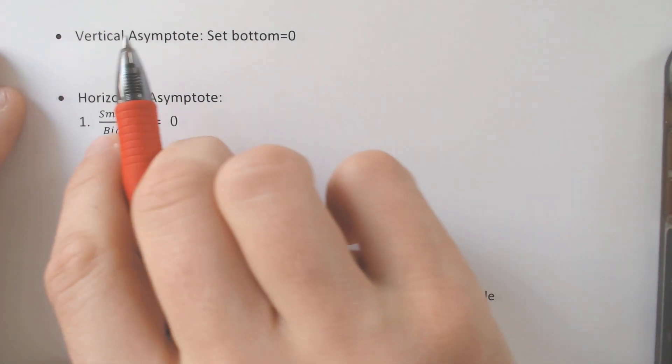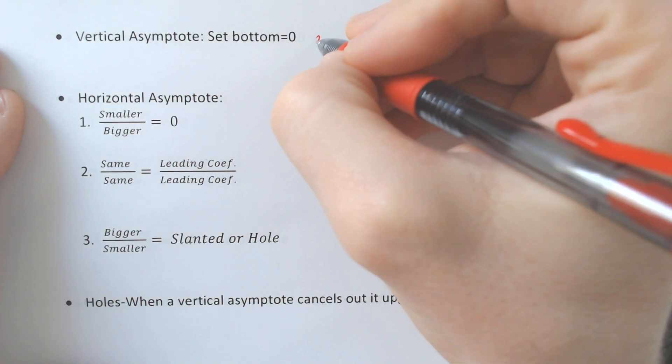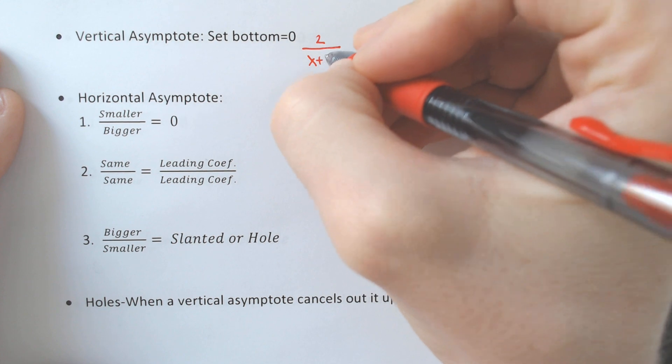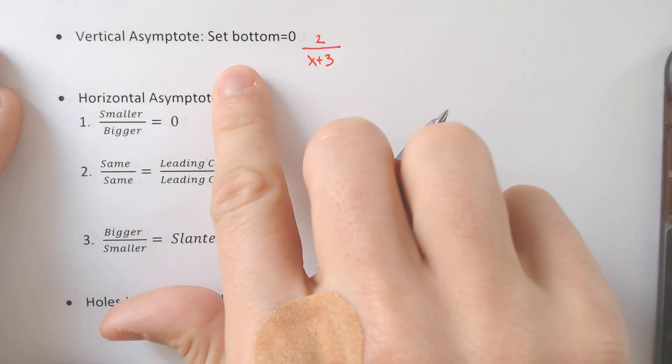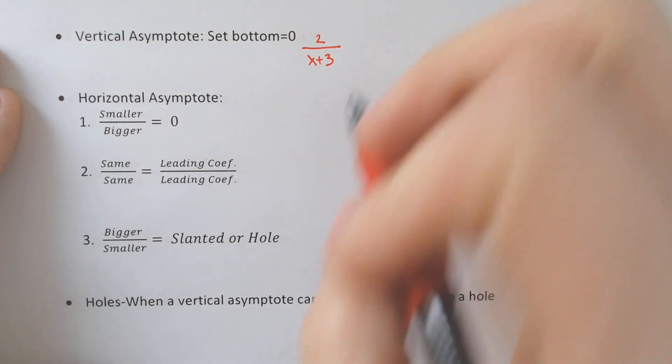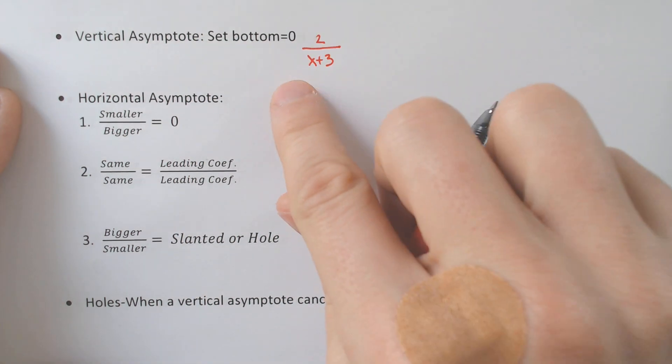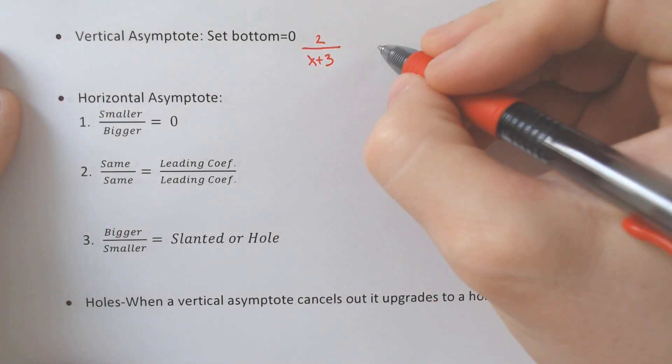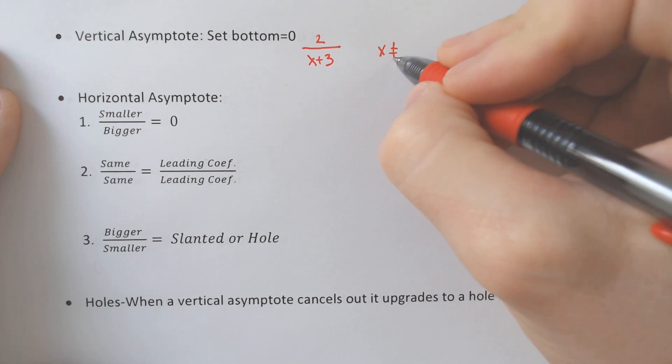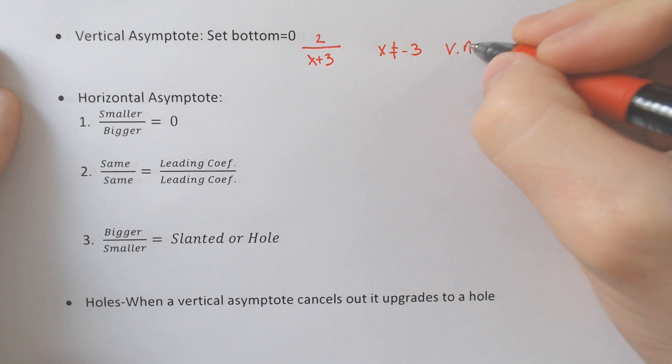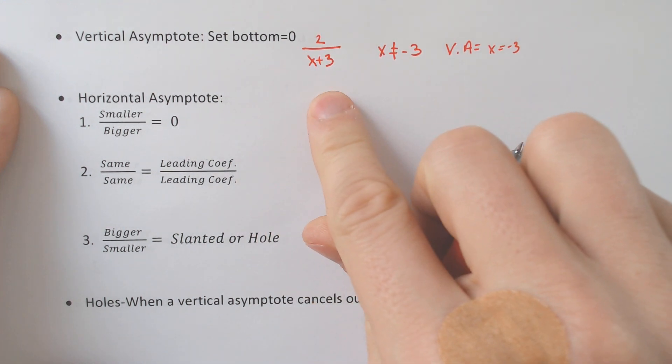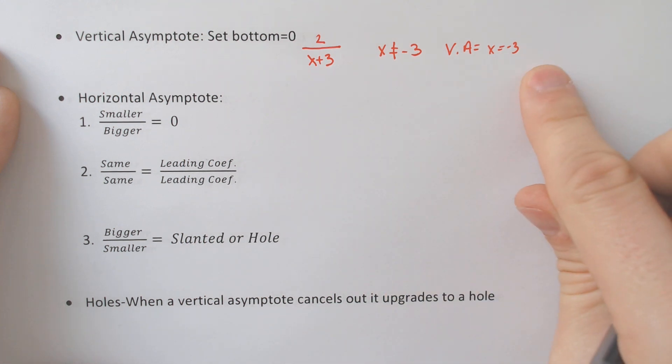So a vertical asymptote, let's say we had 2 over x plus 3 as my example, you would set the bottom of the fraction equal to 0, and you would get your vertical asymptote. So if we set x plus 3 equal to 0, we would find out that x cannot equal negative 3, and that would be our vertical asymptote at x equals negative 3, because if you set x plus 3 equal to 0, you would get negative 3.